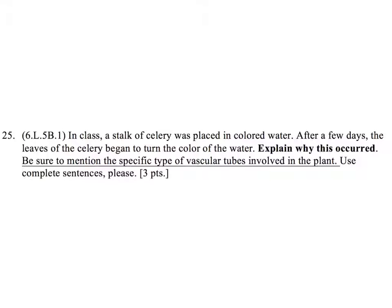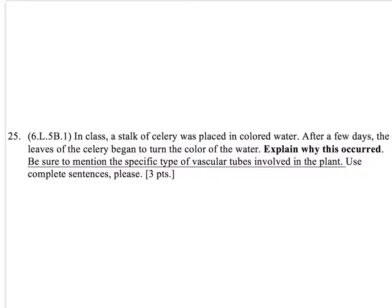Question 25. In class, a stalk of celery was placed in colored water. After a few days, the leaves of the celery began to turn the color of the water. Explain why this occurred. Be sure to mention the specific type of vascular tubes involved in the plant. Use complete sentences, please.